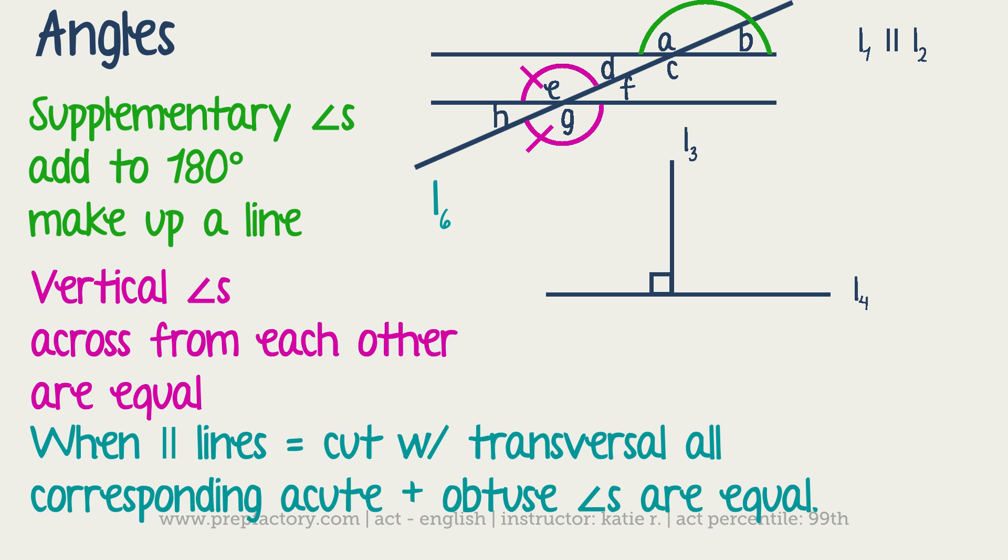The next thing to know is complementary angles. Complementary angles are angles that add up to 90. If we look at our second figure with L3 and L4, which are perpendicular lines, if we were to draw a line in between those, these two angles when you add them up together would equal 90 degrees. Same basic concept as supplementary angles, you're just dealing with half of the space.